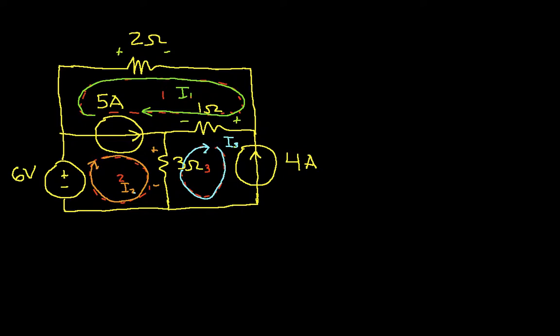So let's look at this current source. I have going through the current source this direction, I2, and so what this tells me then is I2 minus I1 has to be equal to 5 amps.